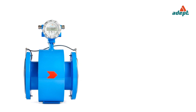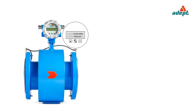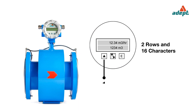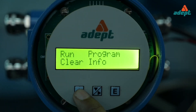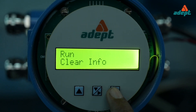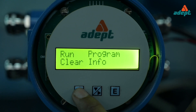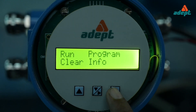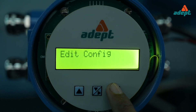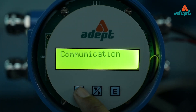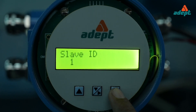The user interface comprises a backlit LCD displaying configuration in 2 rows of 16 characters each, and a set of 3 tactile keys. The flow meter has different modes and the LCD displays information relevant to each of the 4 modes: Run, Program, Info, and Clear respectively. The tactile keys in conjunction with the LCD enable switching between different modes.